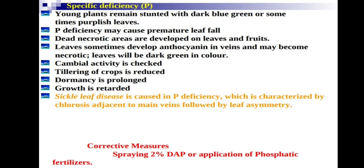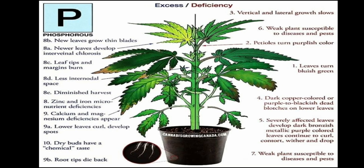Excess phosphorus causes new leaves to grow with thin blades and newly grown leaves develop interveinal chlorosis — loss of chlorophyll between veins. Leaf tips and margins burn, and internodal space is reduced. Importantly, high phosphorus causes zinc and iron micronutrient deficiencies, as well as calcium and magnesium deficiencies.